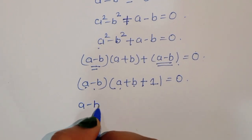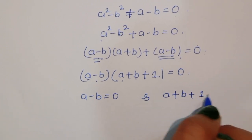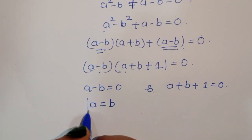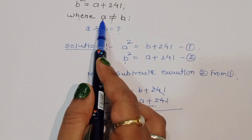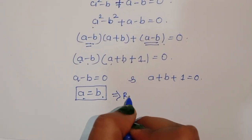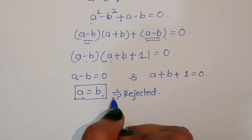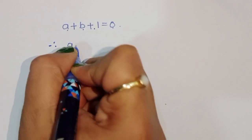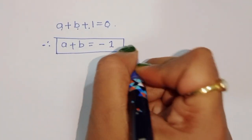We now have two solutions: A minus B equals zero, or A plus B plus 1 equals zero. The first gives A equals B, but the given condition states A is not equal to B, so this is rejected. Therefore, from A plus B plus 1 equals zero, we get A plus B equals minus 1. This is equation 3.